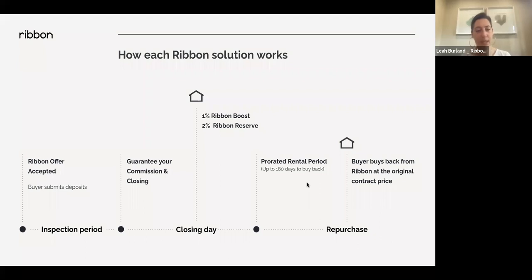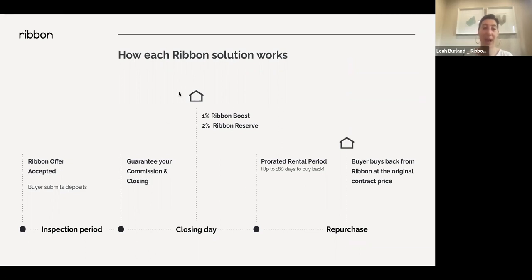Here's the timeline from start to finish. Once the offer is accepted, the buyer submits deposits just as they normally would — at least 2% in deposits between due diligence, earnest money, or seller-paid closing costs. Ribbon doesn't collect the fee until closing, but we confirm the funds are in the contract. The inspection and due diligence period must be a minimum of seven days from when we receive executed documents. During that period, the buyer schedules and pays for the inspection, gets the report, provides a copy to Ribbon, and negotiates repairs with the seller.